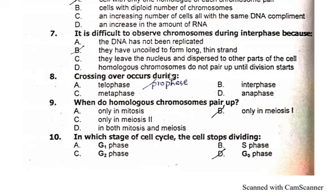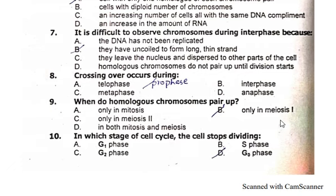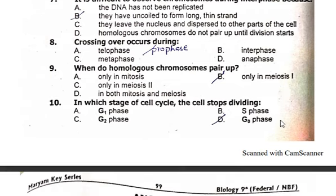Crossing over occurs during the prophase. We have no option for prophase in the choices, but the answer is prophase.